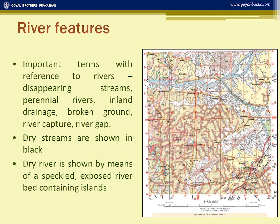The undefined streams are shown in dotted dash and dot-dash lines — these are undefined streams. Broken ground is found in grid square 9679. It is generally found in dry or arid regions; you can see this area is arid because mostly sand features are there. Whenever there is rain, the top soil is washed away and the area is left with subsoil and very uncultivable land. It is found only in arid or dry regions.